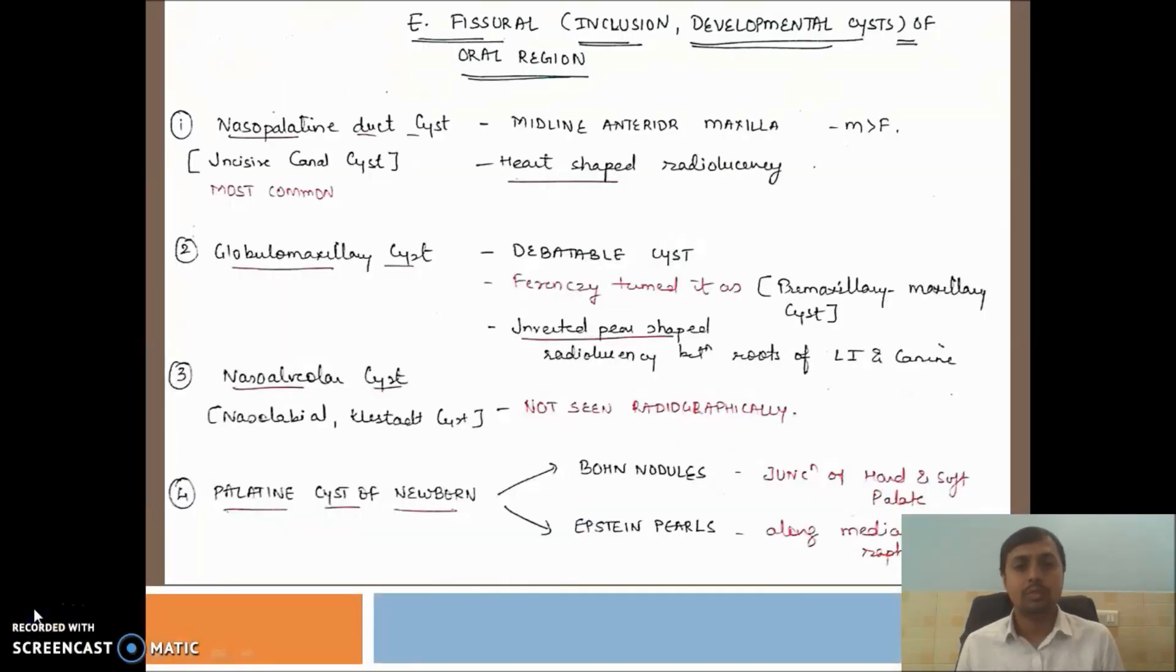Now we have come to the end of our lecture. The last topic is developmental cysts of oral region. They are also known as inclusion cysts or developmental cysts. Why inclusion or developmental cysts? They are mostly found in the embryonic line of fusion. They are true cysts. Their cavity is lined by epithelium filled with some semi-solid or solid matter. Now we come to the most common cyst, that is nasopalatine duct cyst, also known as incisive canal cyst. It is also termed as NPDC. Mostly found in the midline of the anterior maxilla, located in the midline.